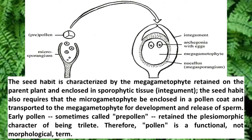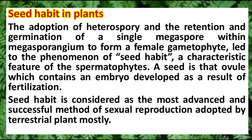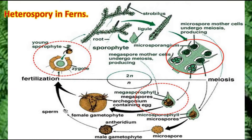Seed habit is a characteristic feature of spermatophytes, which include gymnosperms and angiosperms. A seed is that structure which contains an embryo developed as a result of fertilization. Seed habit is considered the most advanced and successful method of sexual reproduction adopted by terrestrial plants. The example of Selaginella shows microspores and megaspores produced in a single strobilus.